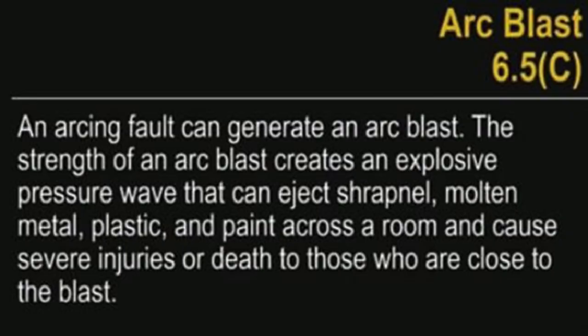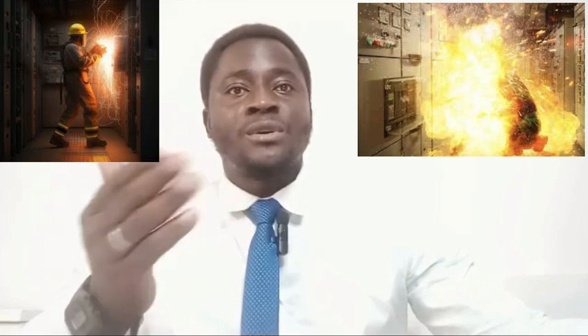Moving to arc blast — as per the National Electricity Code, taken from section 6.5c — an arcing fault can generate an arc blast. The strength of an arc blast creates an explosive pressure wave that can eject sharp nails, molten metal, plastic, and paint across a room, causing severe injuries or death to those close to the blast. When working on panel boards or in electrical rooms, we have to take precautionary measures, as we might encounter arc flash or arc blast.